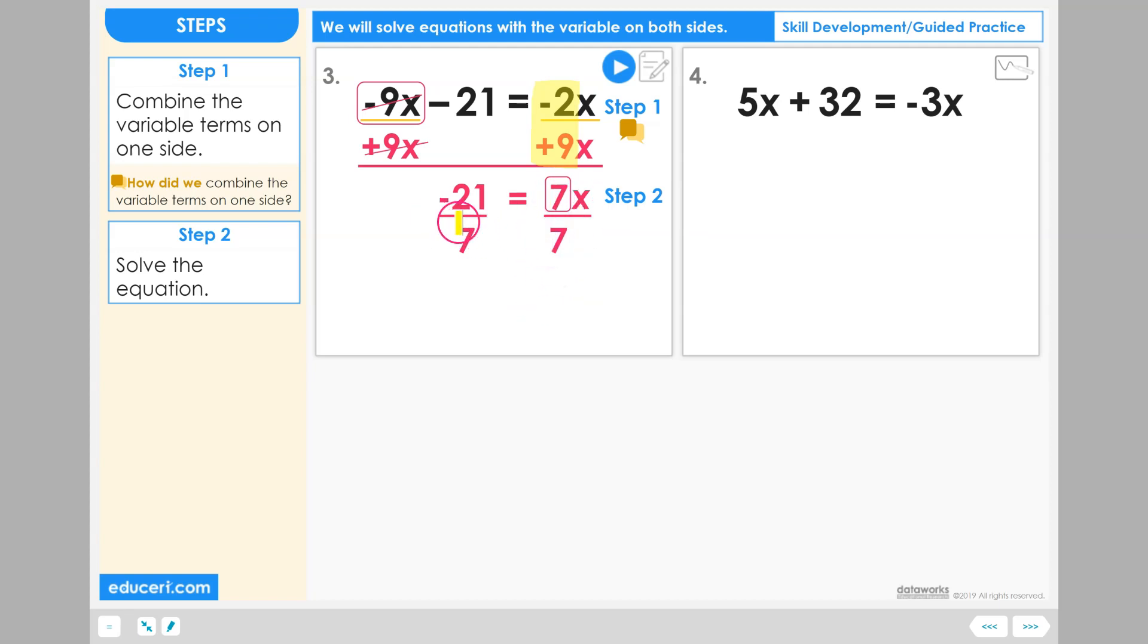And we need to divide by 7 on the left side as well to keep the equation balanced. Now, we can get down to our final stage here, and let's start with this left-hand side. Negative 21 divided by positive 7. 21 divided by 7 is 3, and the answer will be negative because we are dividing a negative by a positive. So, negative 3 is equal to x.